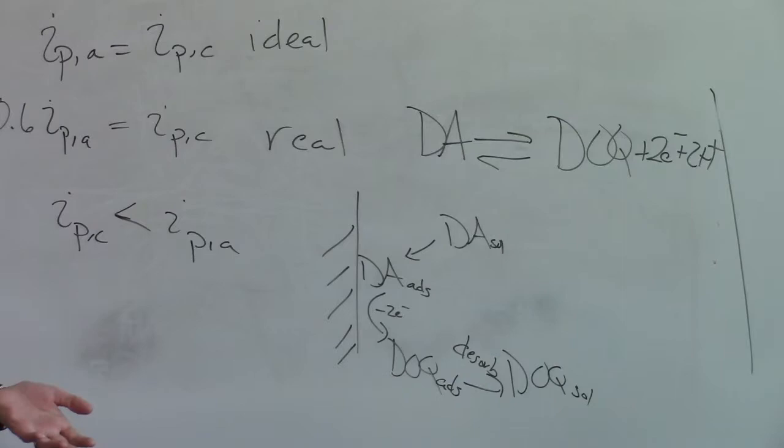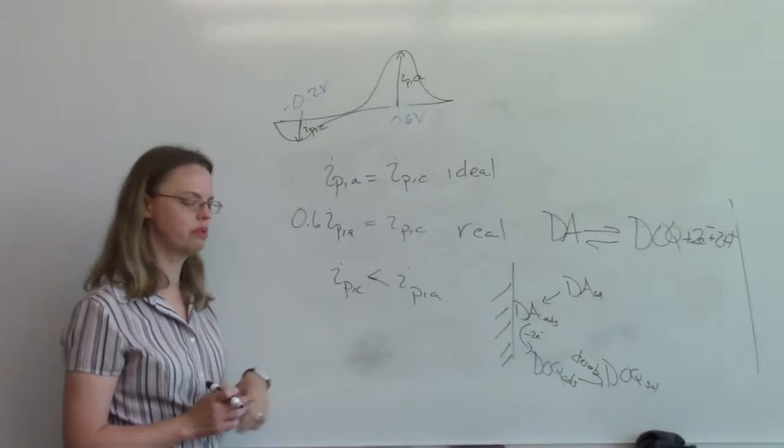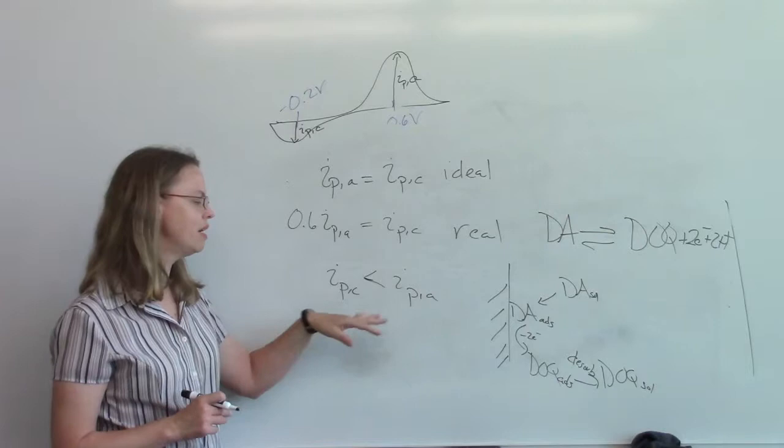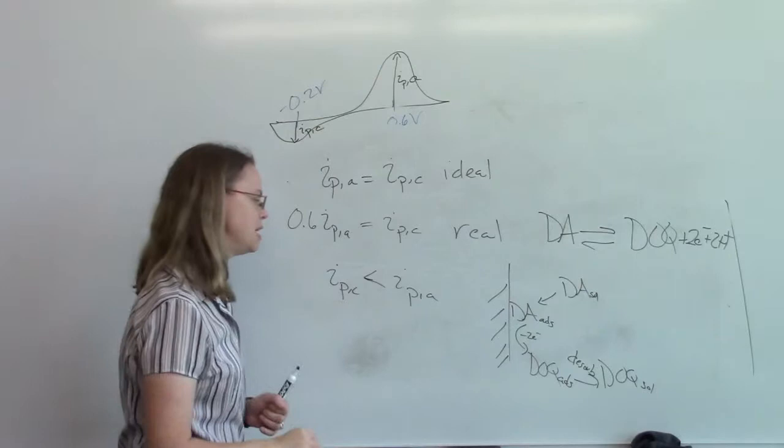The dopamine orthoquinone fell off. We don't see it. So this is a consequence of adsorption, but the adsorption of dopamine and dopamine orthoquinone are not necessarily the same. And so there are things out there now that may correct for this a little bit, but this classic shape, not equal peaks, is what people have seen.